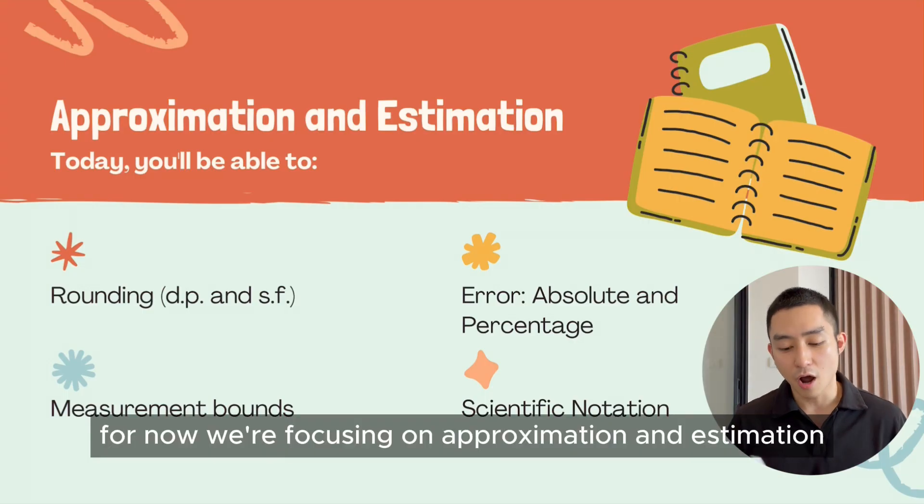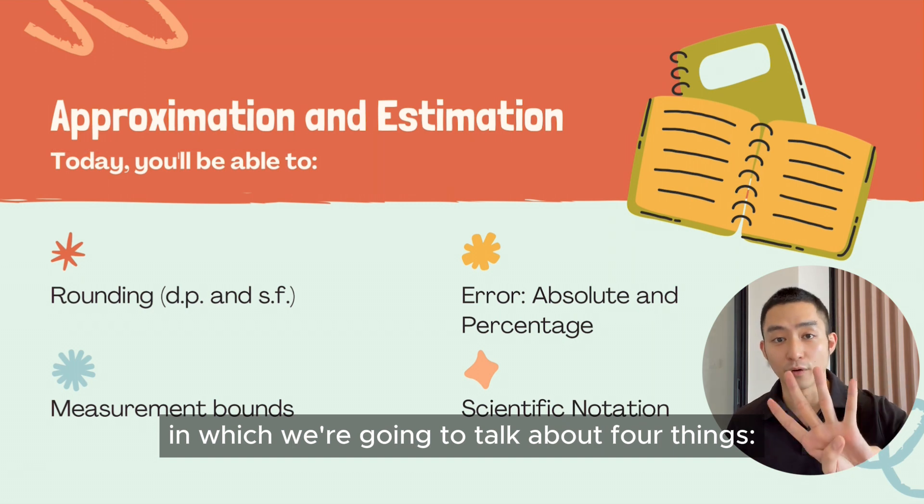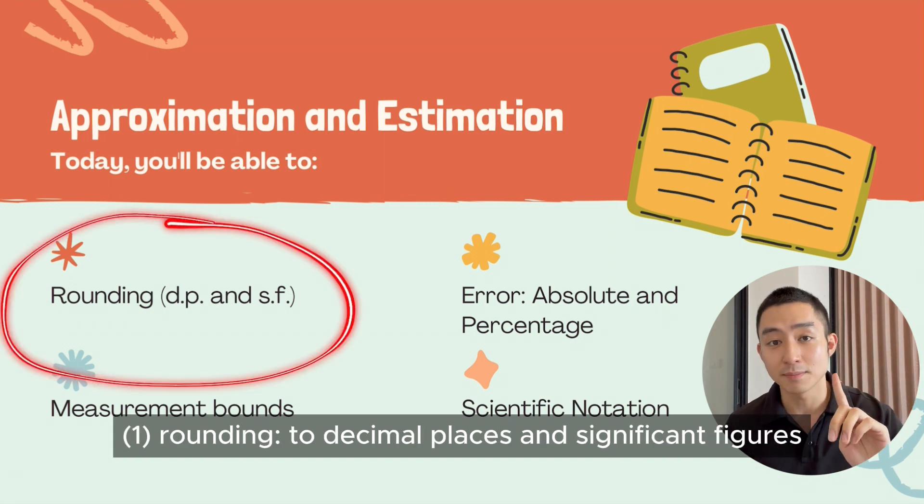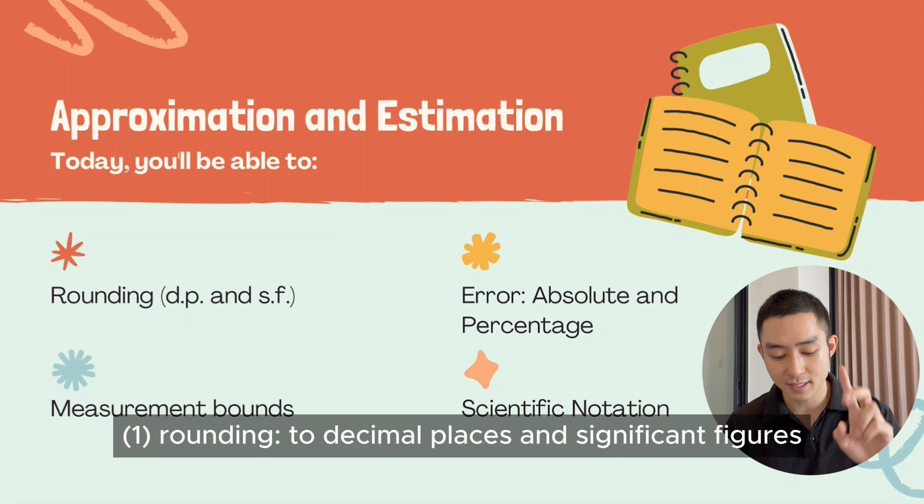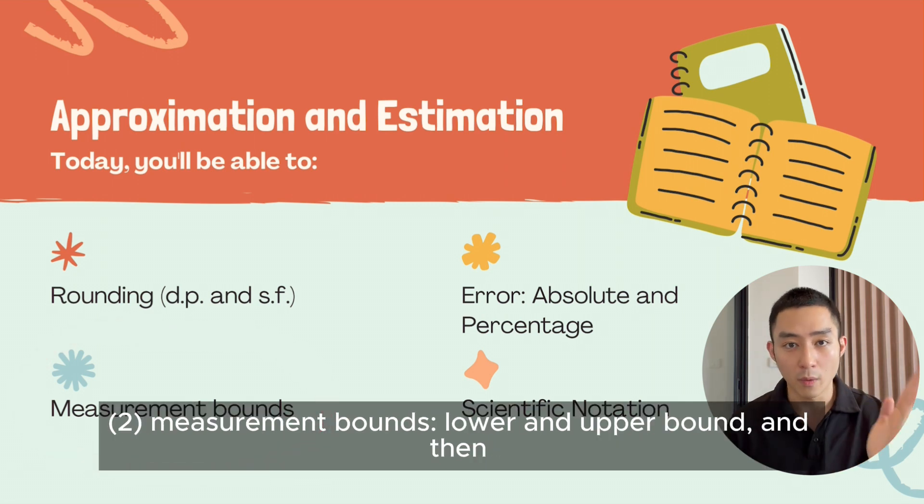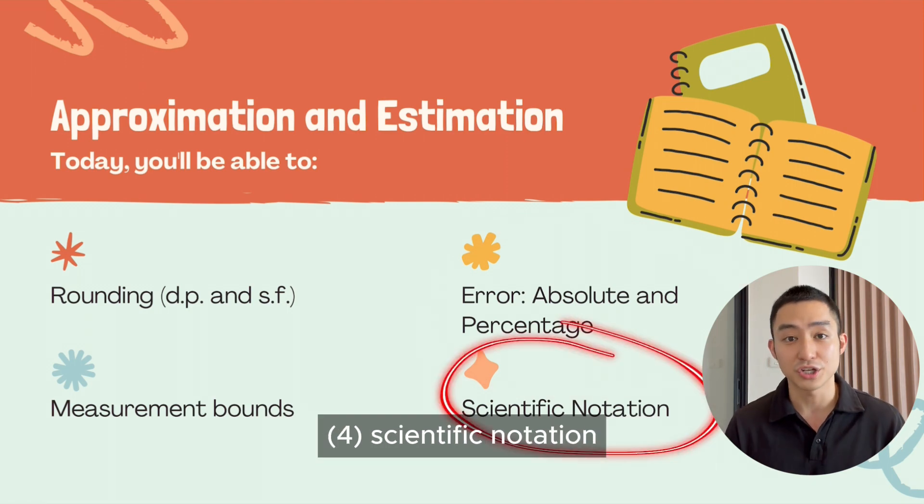For now, we're focusing on approximation and estimation, in which we're going to talk about four things: rounding to decimal places and significant figures, measurement bounds (lower and upper bound), percentage error, and scientific notation.